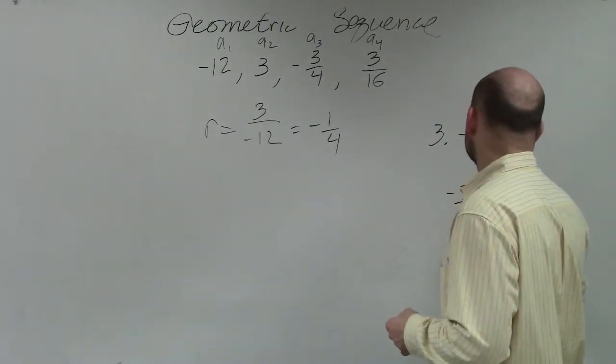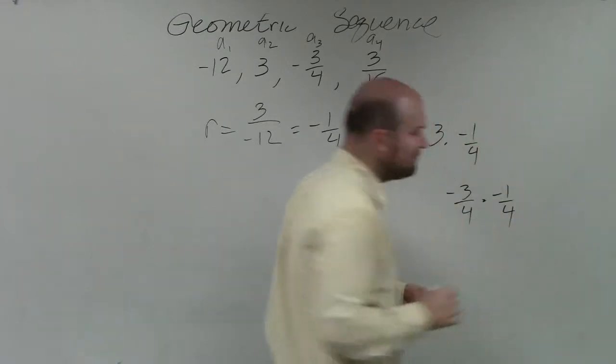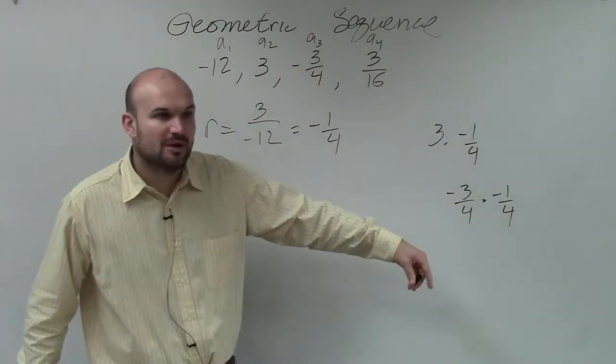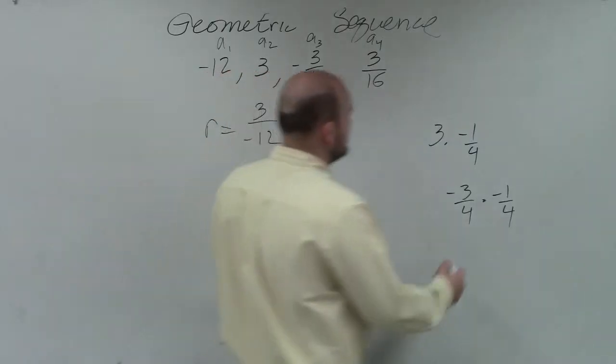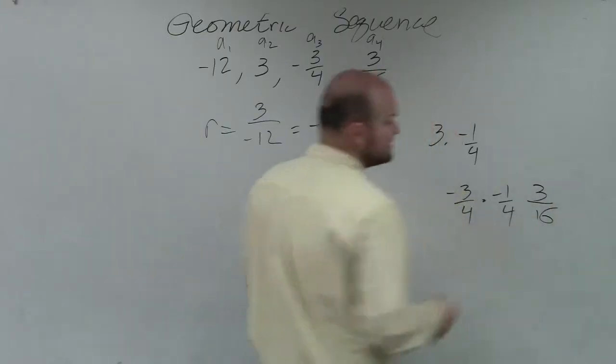Negative 3 fourths times negative 1 fourth. Remember, when you multiply fractions, you just multiply across. That becomes a positive 3 sixteenths.